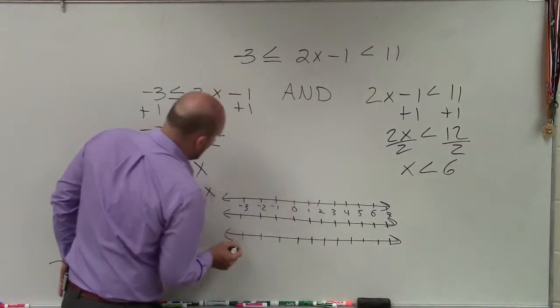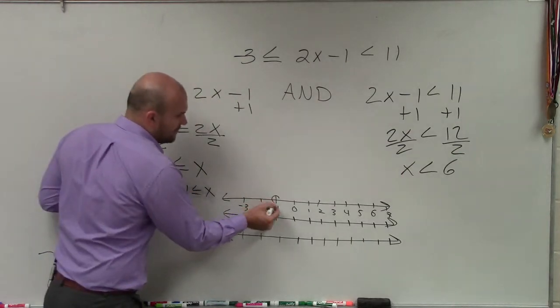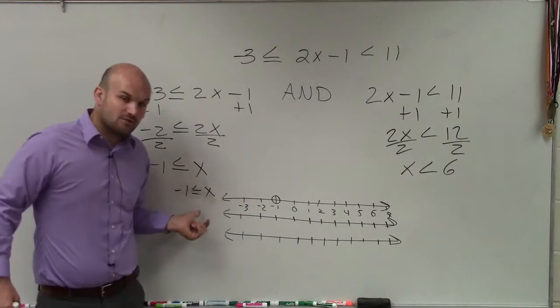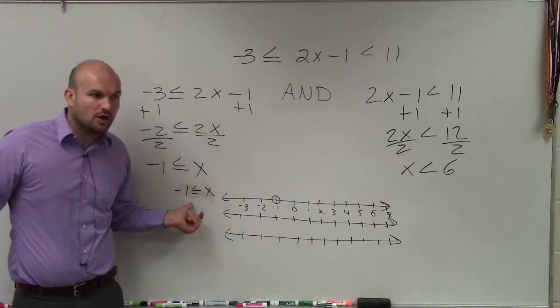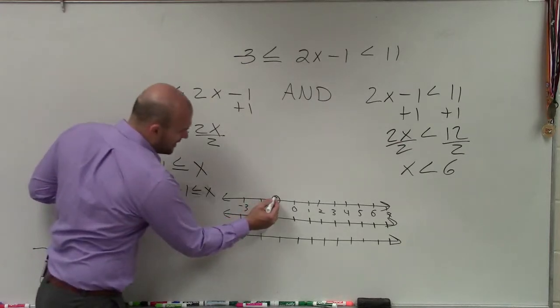So ladies and gentlemen, if I want to graph x is greater than or equal to -1, I go to -1 and I make a circle. Now, is that an open or a closed point? Closed, right, because it has the equal to. So you shade that in.